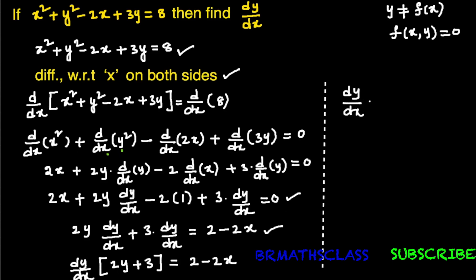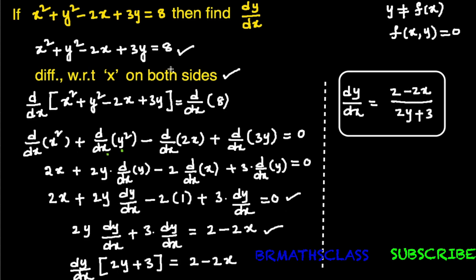From this, we can easily write dy/dx. Therefore, dy/dx = (2 − 2x) / (2y + 3). So if x² + y² − 2x + 3y = 8, then dy/dx = (2 − 2x) / (2y + 3).